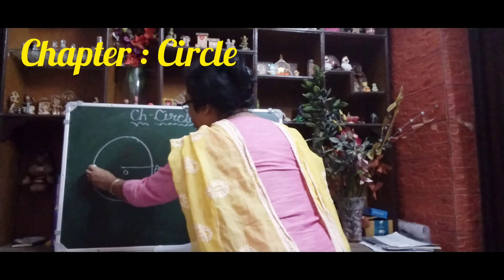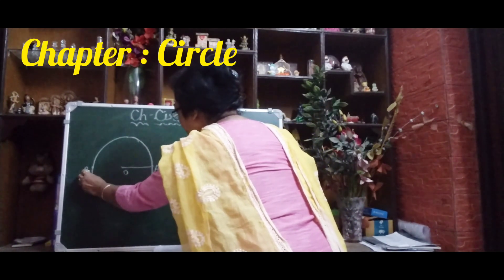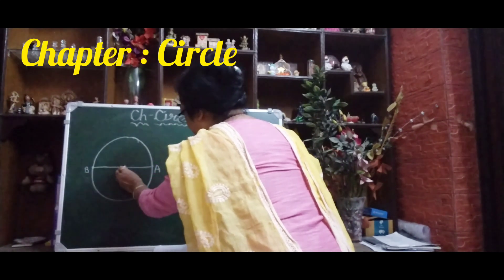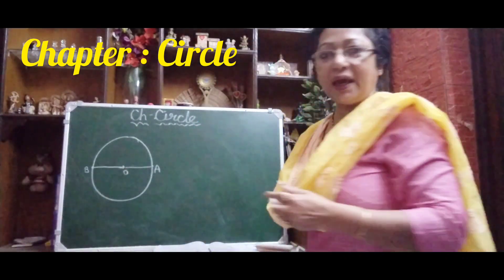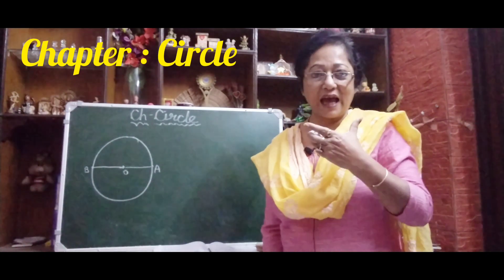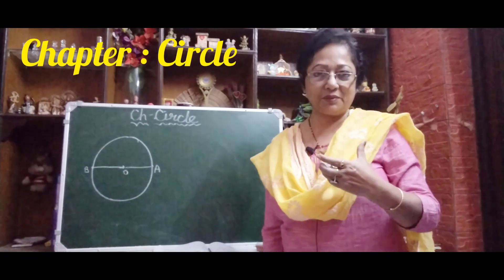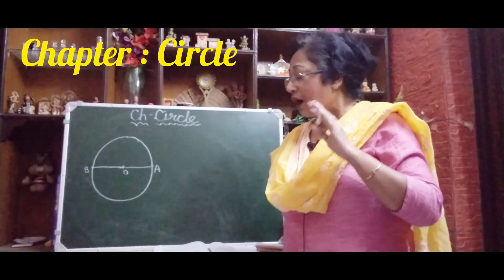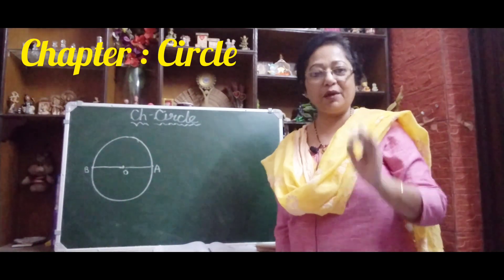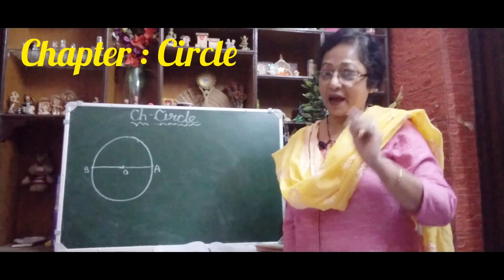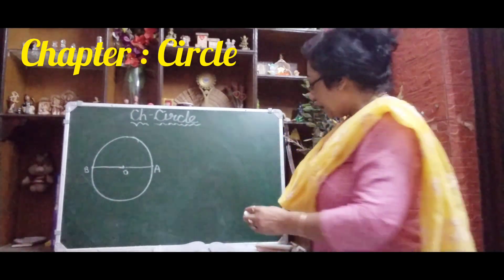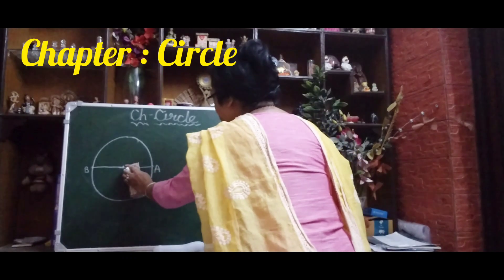I am taking one more point B on the circle. Joining O and B — OB is one more radius. Now what about the full line segment AB? AB is the diameter of the circle. At the same time, AB is also the chord of the circle.